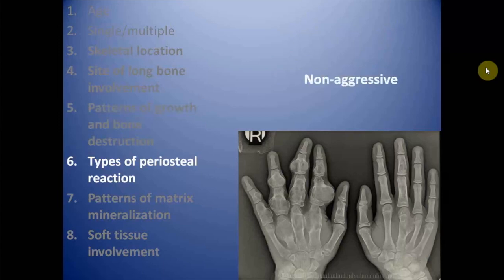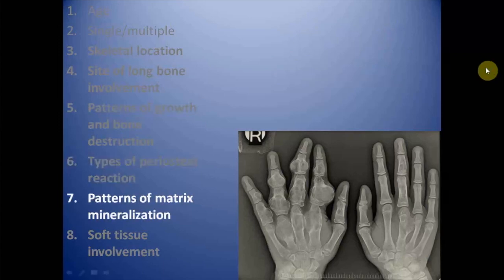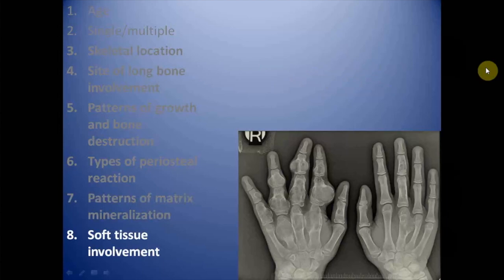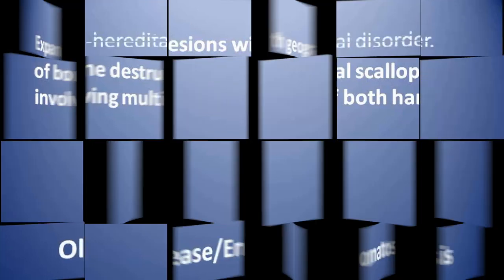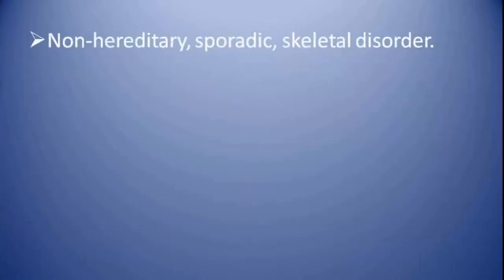The type of periosteal reaction is non-aggressive. The pattern of matrix mineralization shows cartilaginous matrix with ring-and-arc pattern of calcification. There is no obvious soft tissue involvement. This is the case of expansile lytic lesions with geographic pattern of bone destruction and endosteal scalloping involving multiple small bones of both hands.